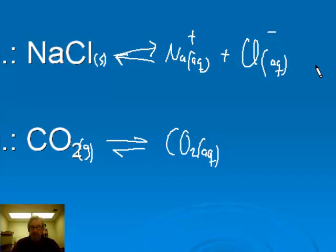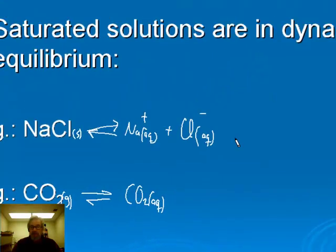The first one, sodium chloride, is an example of what we call an electrolyte. In a later video, we'll explore the consequences of a substance being an electrolyte for the way the solution responds and behaves.